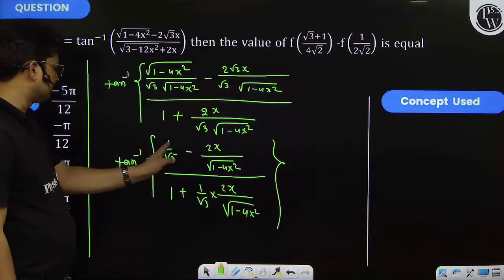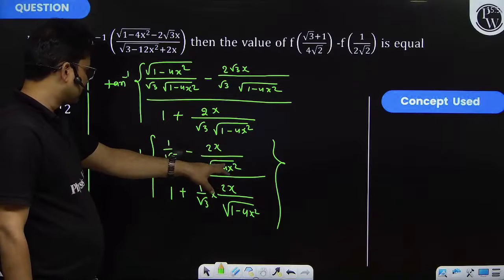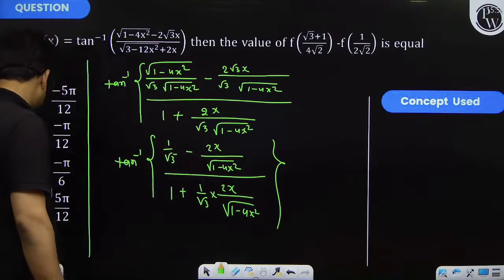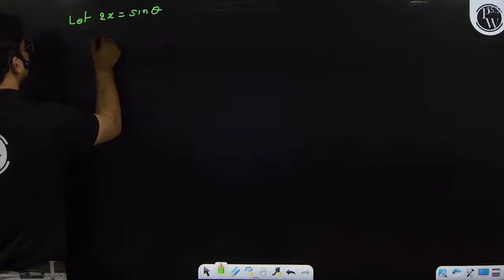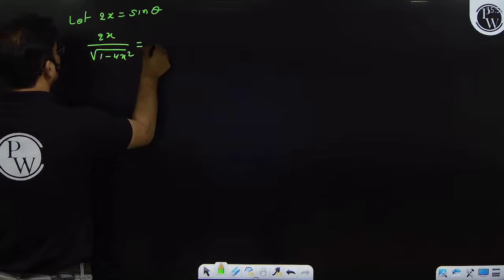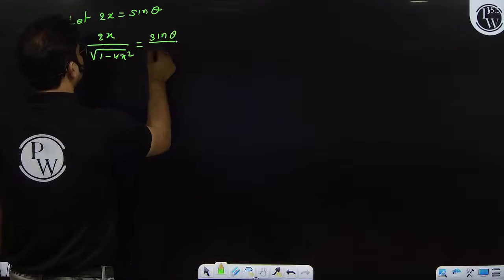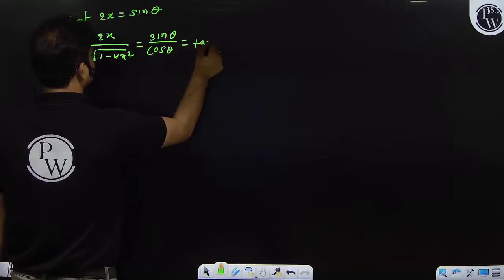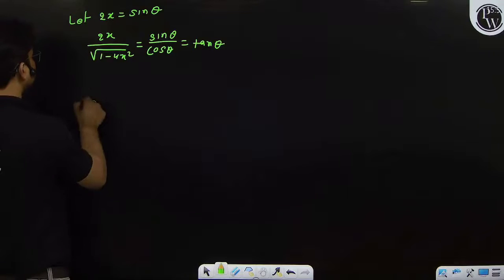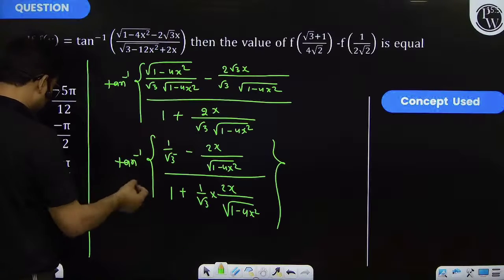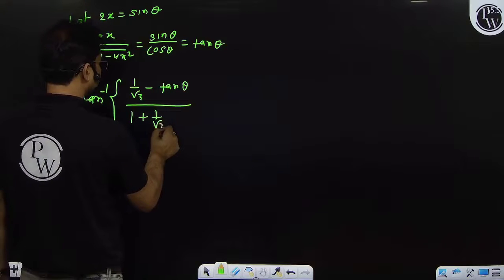Now we will use the concept of tan⁻¹x - tan⁻¹y. Before going to that, we substitute 2x = sin θ, so 2x/√(1 - 4x²) = sin θ/cos θ = tan θ. Now the expression becomes tan inverse of [1/√3 - tan θ] divided by [1 + (1/√3)·tan θ].